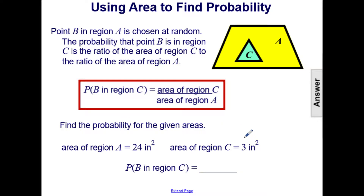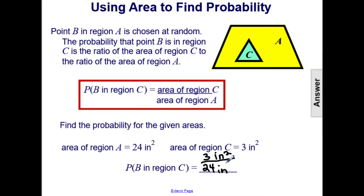What if we give actual numbers to the areas? Let's say the area of region A equals 24 inches squared, and the area of region C equals 3 inches squared. So the probability that B is in region C is 3 inches squared over 24 inches squared, which reduces to 1 over 8. The probability is 1/8, or 0.13, or 13%.